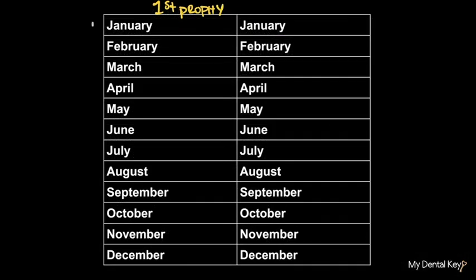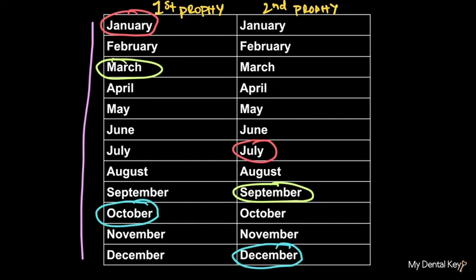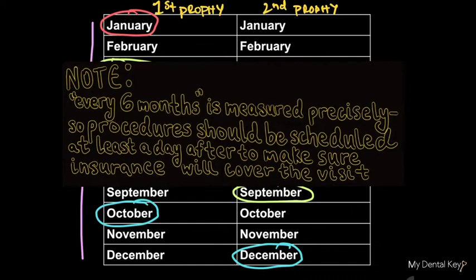Another way that insurance might handle frequencies for their cleanings is to cover the service twice per benefit period. This means that the patient can get a cleaning anytime, up to two times a year, during that benefit year. So if the benefit year is January to December, then the patient can get a cleaning in January and July, March and September, or even October and December if they wanted. Individuals under the twice per benefit period coverage can choose any combination of months, twice in that benefit period. Note that if the insurance plan is under the every six months period, it's measured precisely, so procedures should be scheduled at least a day after to make sure insurance will cover the visit.